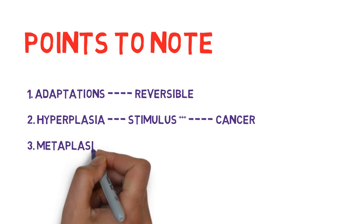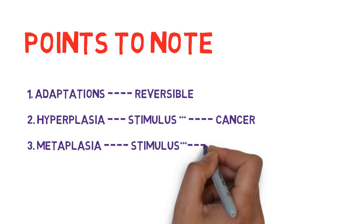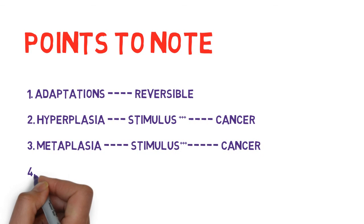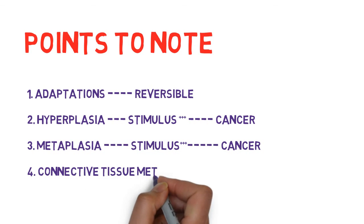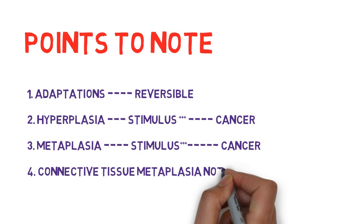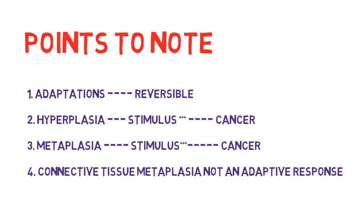Point 3: If stimulus for metaplasia persist, it can lead to malignant transformation in metaplastic epithelium. Point 4: Connective tissue metaplasia, that is formation of cartilage, adipose tissue or bone in non-native tissue, it does not occur as an adoptive response but may be due to cell injury or tissue injury.